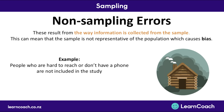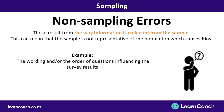Similarly, if people who are hard to reach or don't have a phone aren't included in a study, this causes the sample to not be representative of the population, which causes bias. This has nothing to do with sample size or chance — it's due to the way information is collected. Another example of a non-sampling error is the wording and order of questions, which can influence survey results.